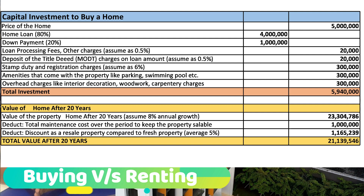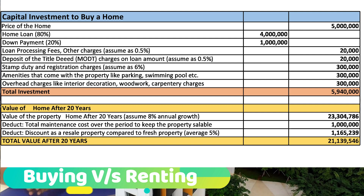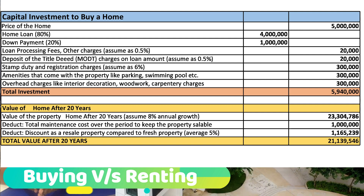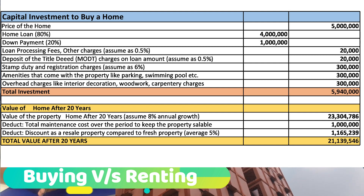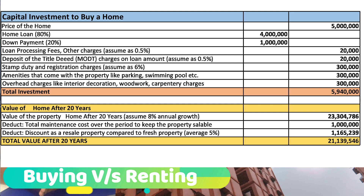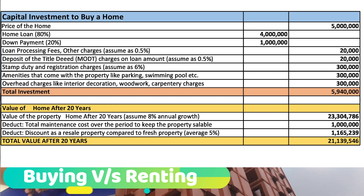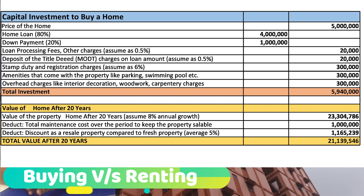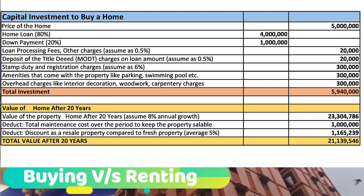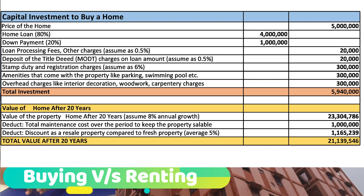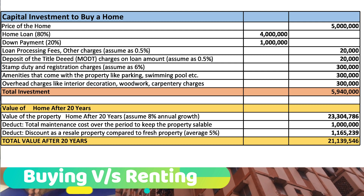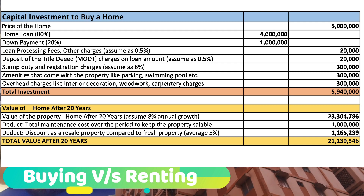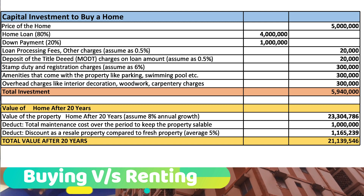Now let's see the value of the home after 20 years. Considering 8% as annual growth, the value of the property becomes 2 crore 33 lakh. Deducting 10 lakh for maintenance cost over the period to keep the property resellable, and applying a 5% discount versus fresh property, the total value of the property after 20 years will be 2 crore 11 lakh 39 thousand.